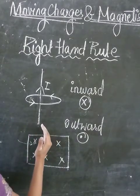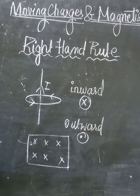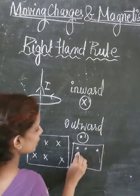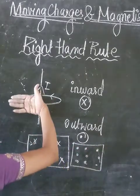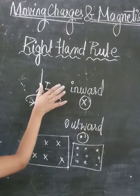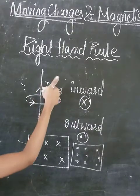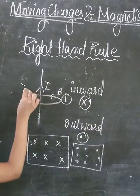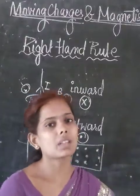The magnetic field starts from the inward direction into the plane of the paper. The inward direction of the magnetic field is shown with the help of the cross sign, and the outward direction — where the magnetic field comes out of the plane of the paper — is shown with the help of the dot sign. If the current direction is upward and the curl of fingers shows outward, then the dot represents the outward magnetic field, and the cross represents the inward field.